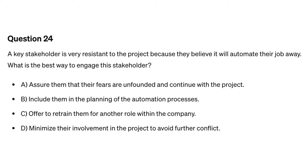Question twenty-four. A key stakeholder is very resistant to the project because they believe it will automate their job away. What is the best way to engage this stakeholder? A. Assure them that their fears are unfounded and continue with the project. B. Include them in the planning of the automation processes. C. Offer to retrain them for another role within the company. D. Minimize their involvement in the project to avoid further conflict.